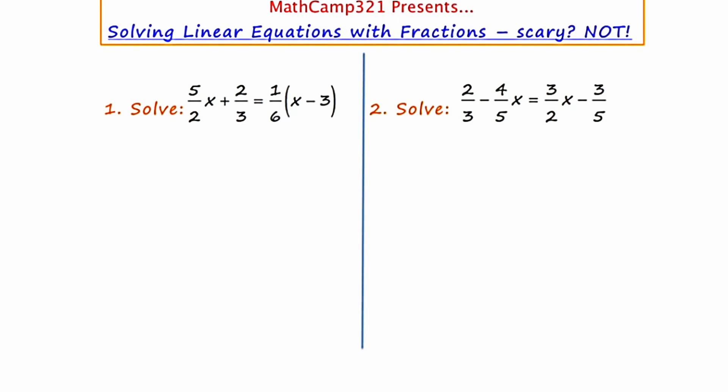Let's take a look at example one. Solve five halves x plus two thirds equals one sixth times the quantity x minus three. The first thing that I'm going to do is focus on the denominators that occur in the problem. The denominators are two, three, and six.